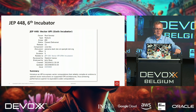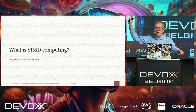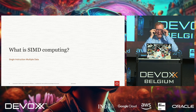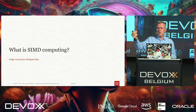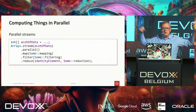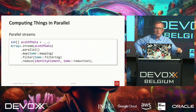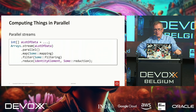The first question is: what does SIMD computing mean? Maybe some of you have never heard about this before. SIMD computing is about parallel computing. When you think of parallel computing, the first idea that comes to mind is probably parallel streams — you write code, you have a big array full of integers, you stream them, call parallel, and magically things are computed in parallel. You map, filter, reduce, and get a result, hopefully faster — though not always.